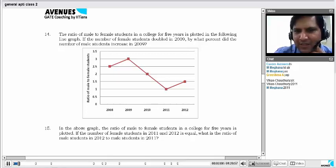You have to understand this data which is given to you first. What they are showing by this data is the ratio of male to female students. So what they are saying is in the year 2000, the ratio of males to females is 2.5. What does that mean?